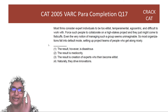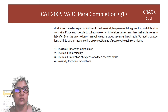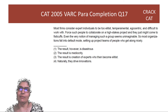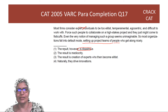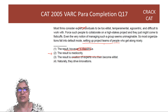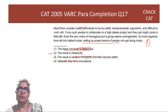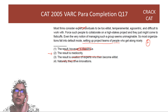Next para completion: Most firms consider expert individuals to be too elitist, temperamental, egocentric, and difficult to work with. Force such people to collaborate on a high-stakes project and they just might come to fisticuffs. Even the very notion of managing such a group seems unimaginable. So most organizations fall into default mode, setting up project teams of people who get along nicely — meaning they are not expert individuals. Option 1 says the result is disastrous — too extreme, many organizations are working quite well. Option 2 says the result is mediocrity — okay. Option 3 says the result is creation of experts — no, you can't create experts easily this way. Option 4 says they naturally drive innovations — why would non-experts drive innovations? Best is option 2.